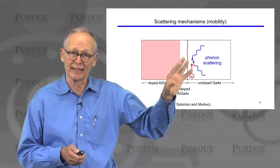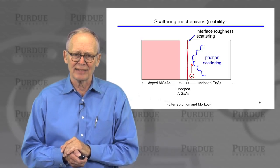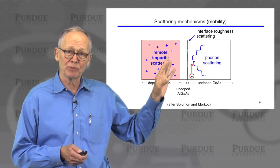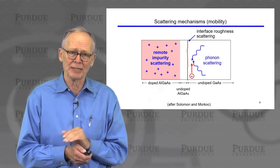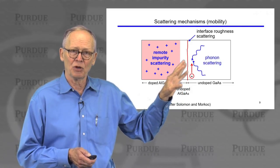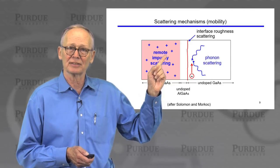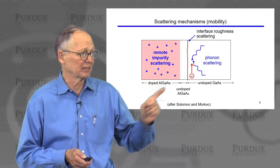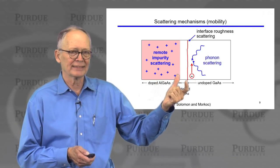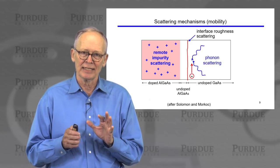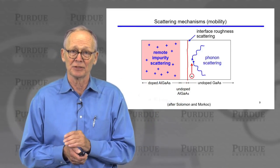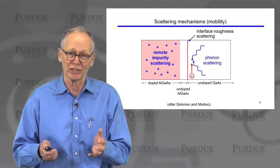There is also scattering from phonons in the gallium arsenide (or whatever small-bandgap material is used). Beyond surface roughness and phonon scattering, there is a third mechanism: the ionized dopants in the wide-bandgap layer create electric fields that can penetrate into the small-bandgap layer, and the remote ionized impurities can scatter channel electrons. For this reason, an undoped setback layer is often included to push the dopants further from the channel. However, setting the dopants back too far reduces the electron transfer, so there is a tradeoff between mobility and charge density.